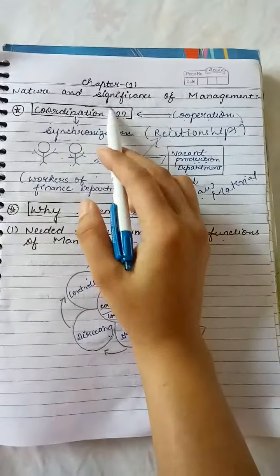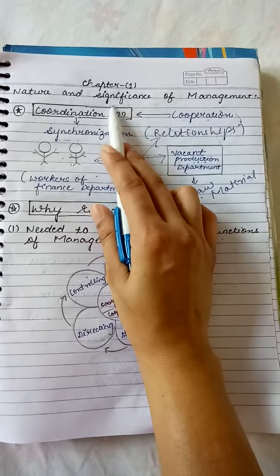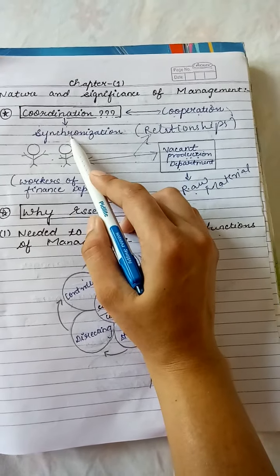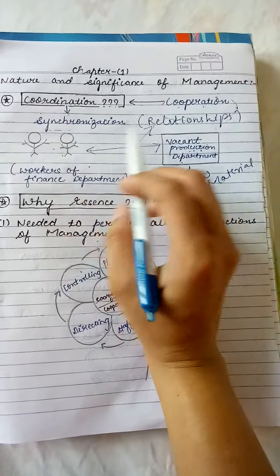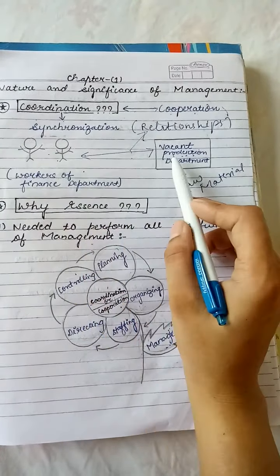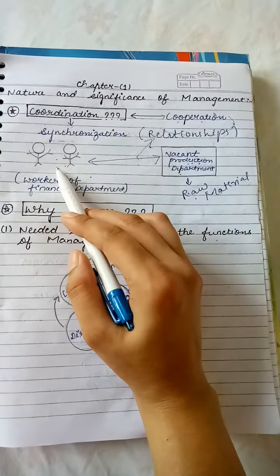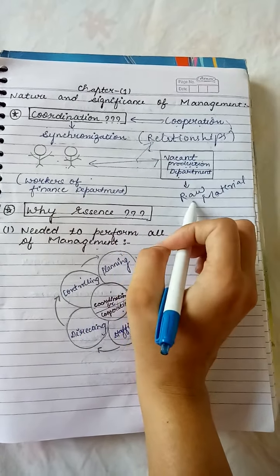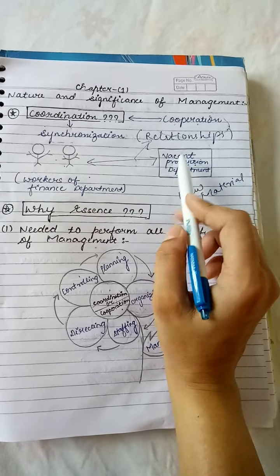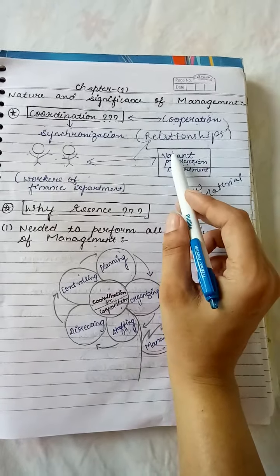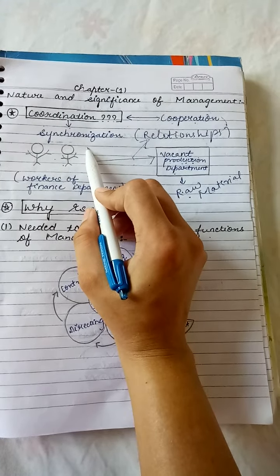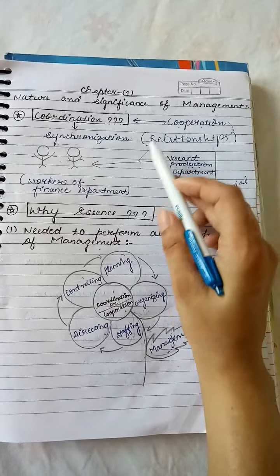Coordination is the essence of the management. It is very important why? Because the coordination leads to the cooperation within the organization. What is the focus of the coordination? The synchronization of activities, the departments, the relationships. If the finance department knows the production department is struggling because the raw material is not available because of lack of finance, the finance department will immediately provide funds and the production department will soon start the production. So coordination is the essence of the management because it will ultimately lay down the focus upon synchronization of the activities of the various departments that exist within the organization.